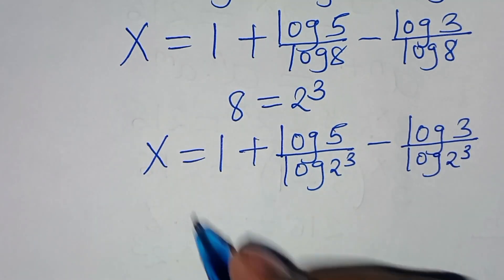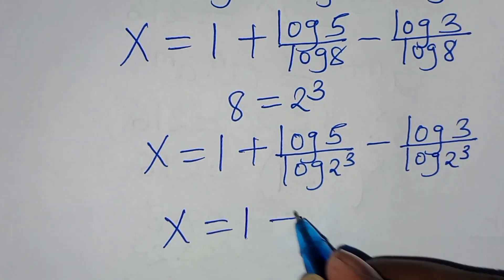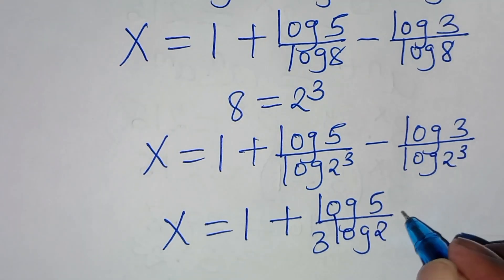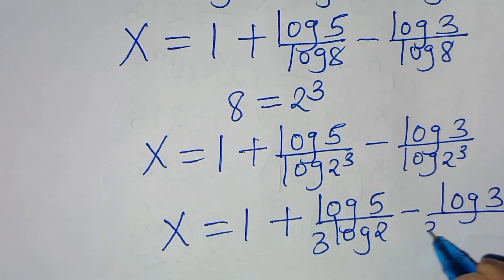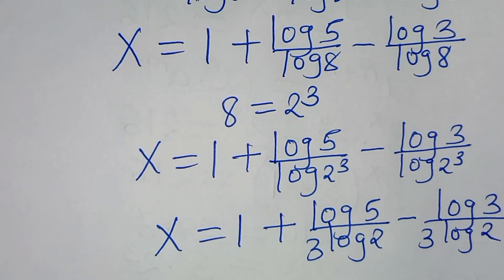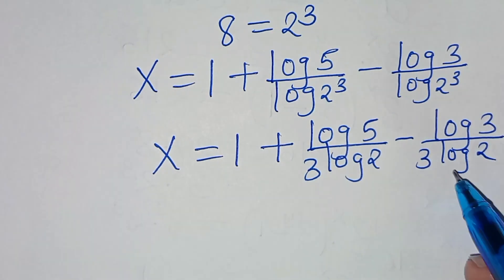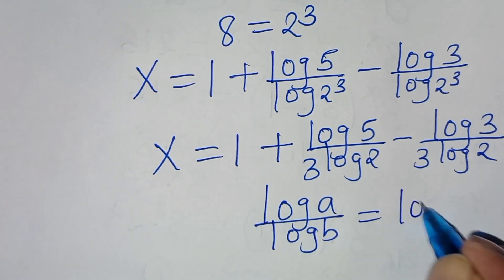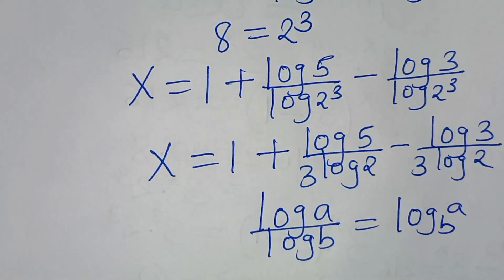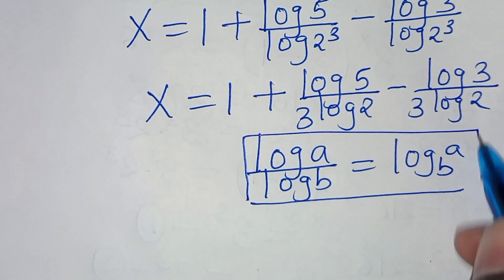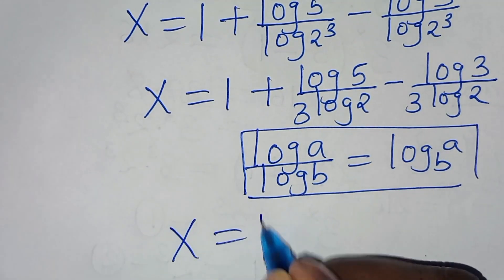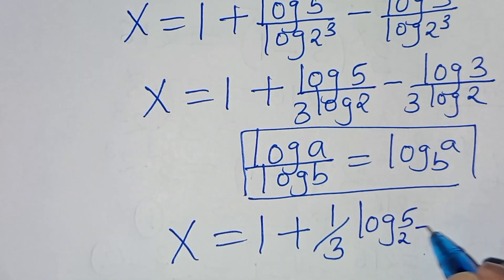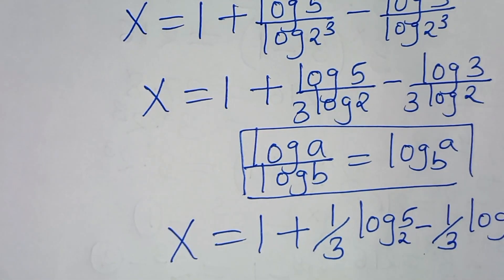Applying the change-of-base property, log a over log b equals log a to base b. Simplifying, log 8 over log 8 equals 1. Then log 5 over log 2 and log 3 over log 2 apply the same property, giving x equals 1 plus (1/3)log₂5 minus (1/3)log₂3.